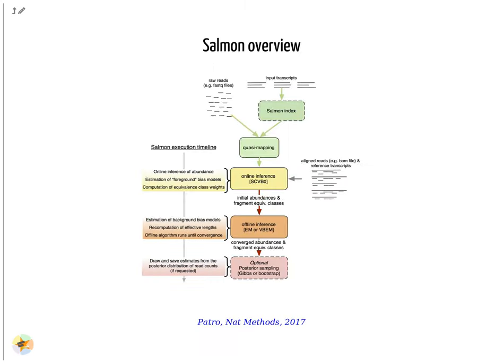Overview of Salmon mapping and quantification: Salmon accepts either raw or aligned reads. When raw reads are provided, Salmon uses its lightweight, ultra-fast mapping model called quasi-mapping for abundance estimation. An online inference algorithm then estimates initial expression levels and model parameters. Following that, an offline inference module learns background bias models from the initial abundance estimates and corrects the effective transcript lengths. Finally, an expectation maximization algorithm is used to estimate the relative abundances.